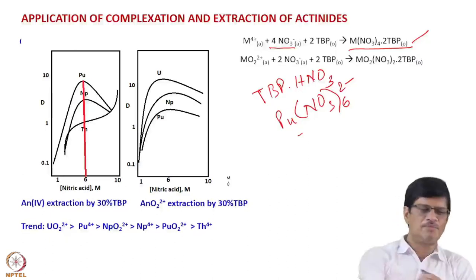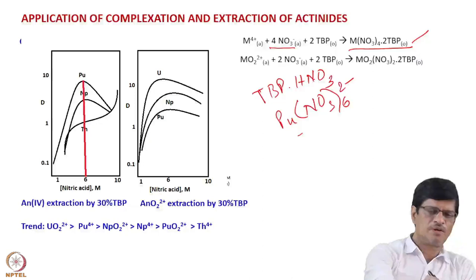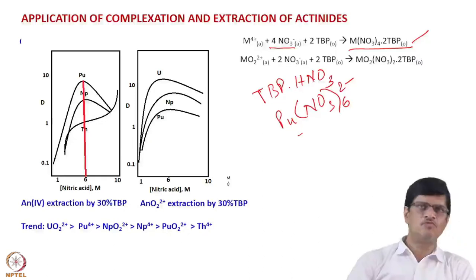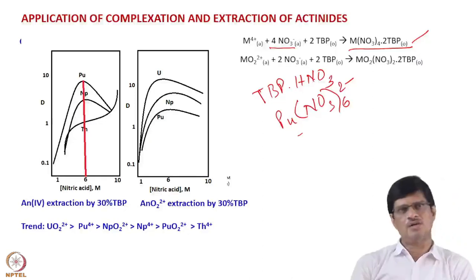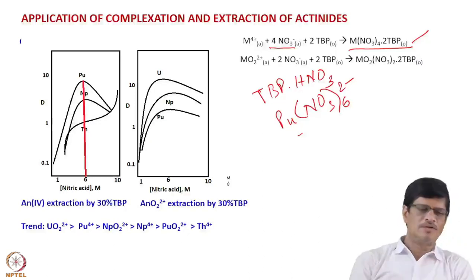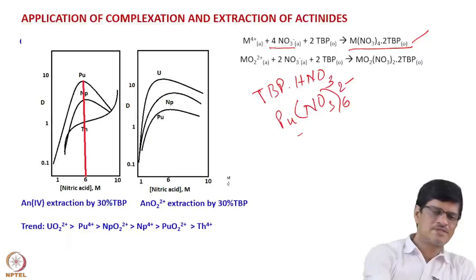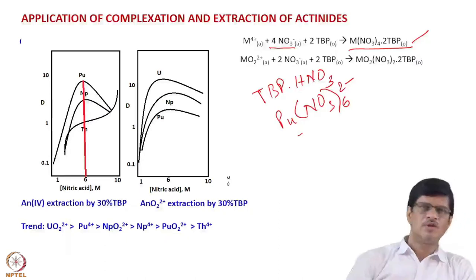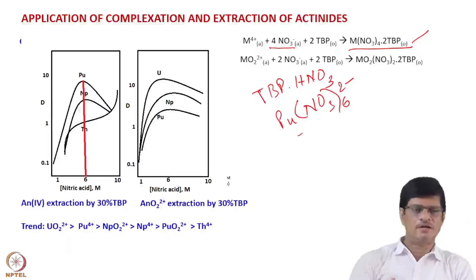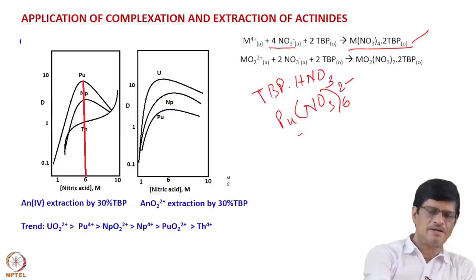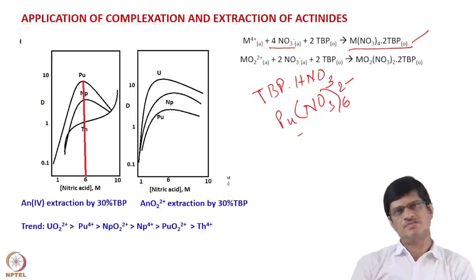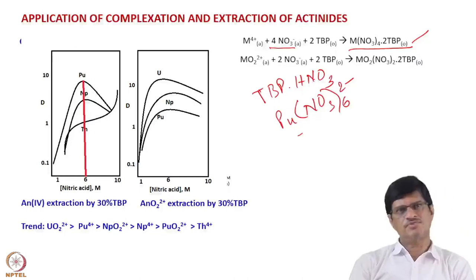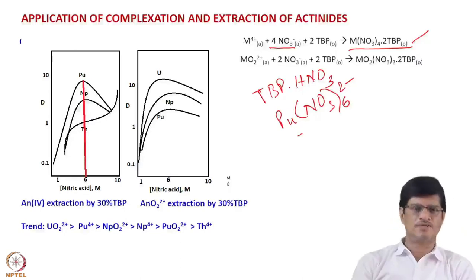Similar behavior is seen for neptunium(IV) as well. On the other hand, thorium extraction is significantly lower, and at higher nitric acid concentration the thorium extraction is still increasing, which is because of a salting-out effect.